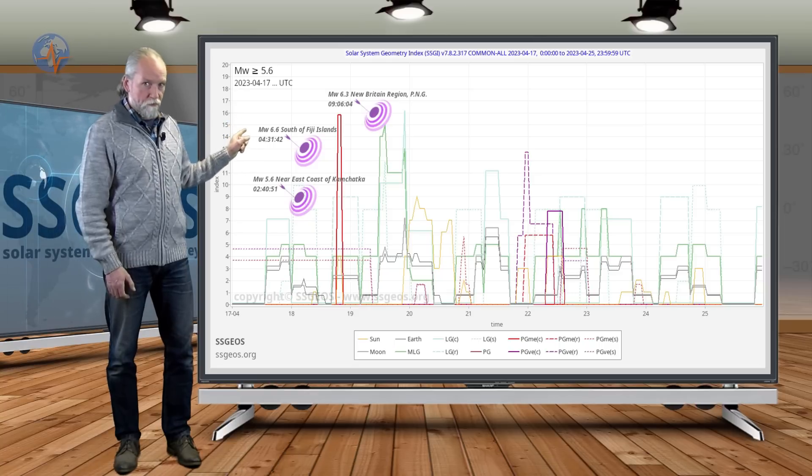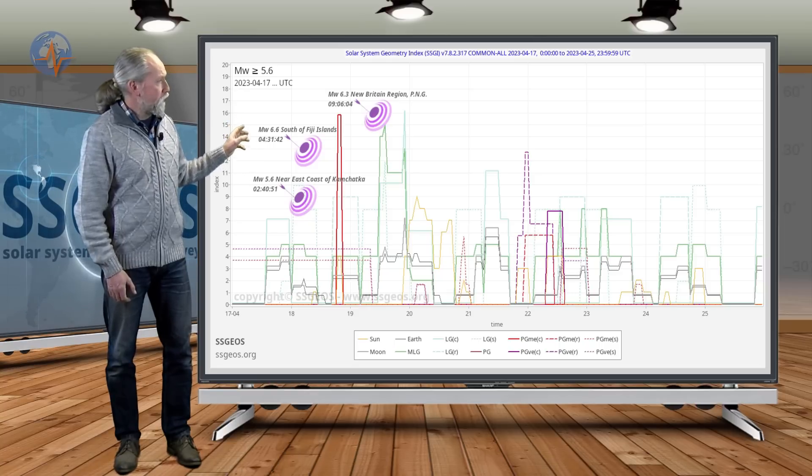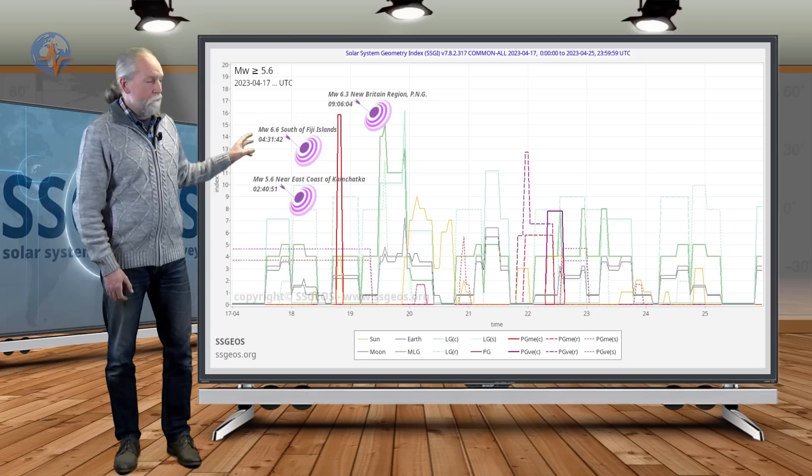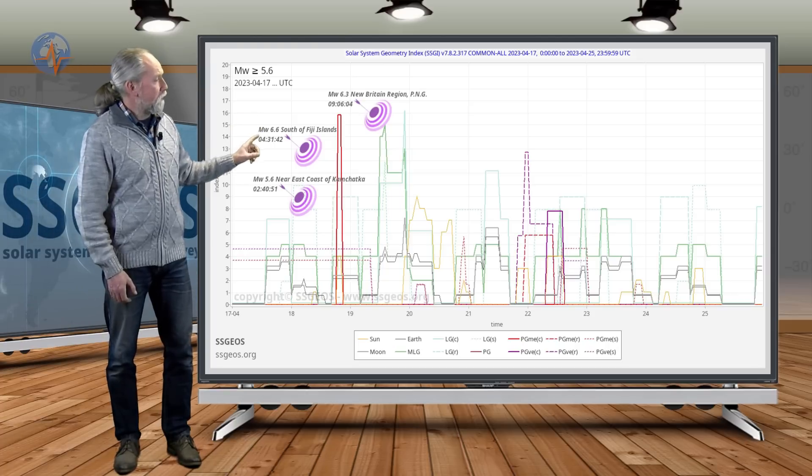It peaked magnitude 6.6 deep below Fiji. As you can see, this is magnitude 5.6 and greater. We also see on the SSGI graph that we have a convergence of critical planetary geometry on the 21st 22nd.